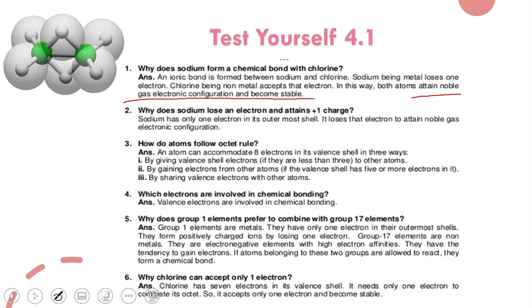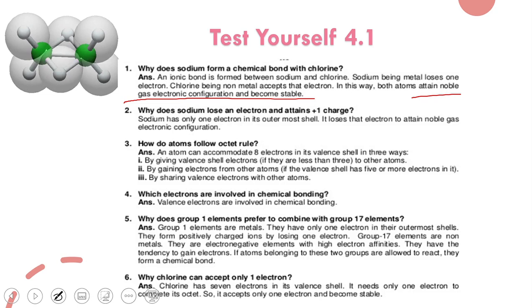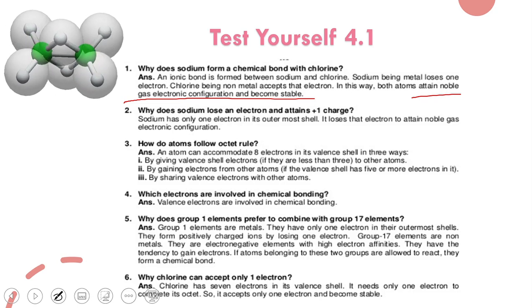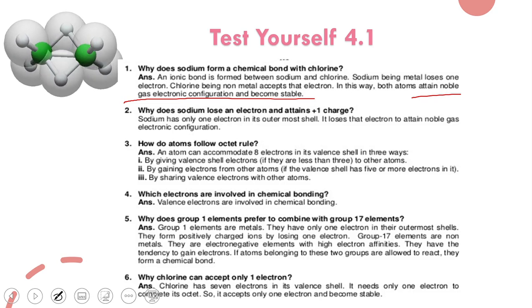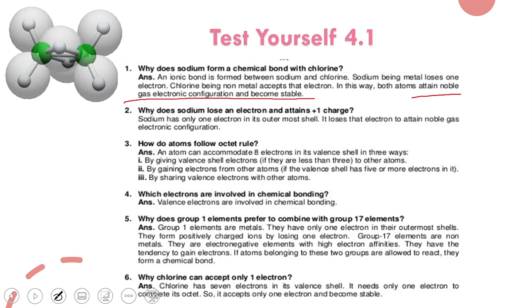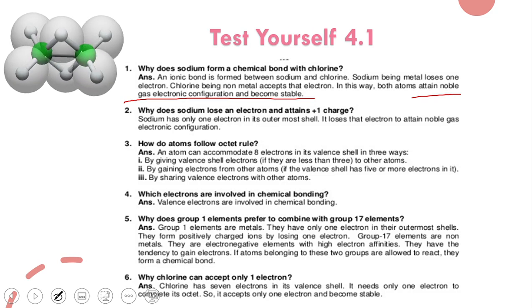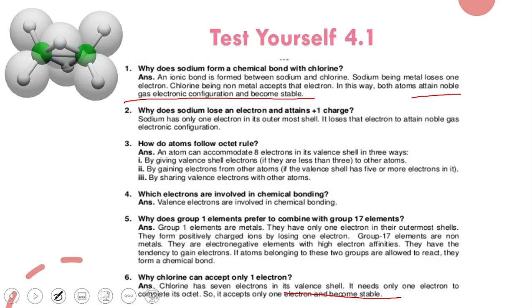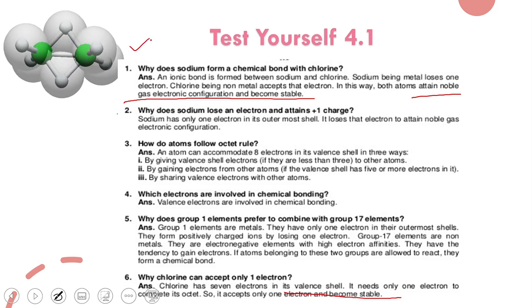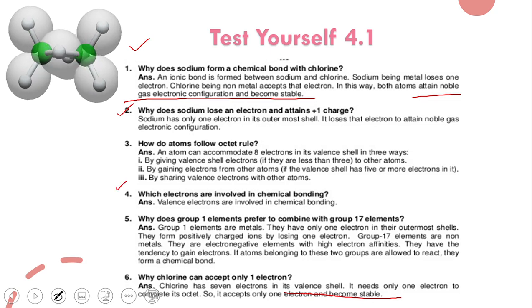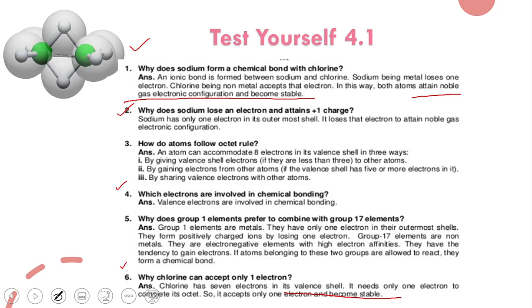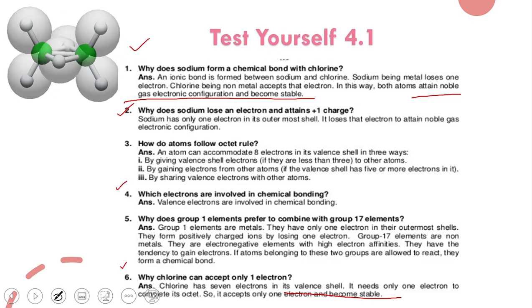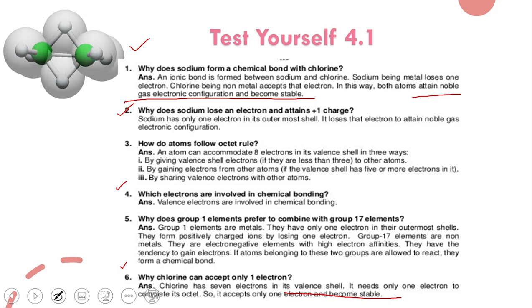Why can chlorine accept only one electron? Because there is only one vacancy in its last shell — it already has seven electrons and needs only one more to complete its octet. After completing its octet it becomes stable. You will write the answers to questions number one, two, four, and six in your notebook. The remaining ones are present on the topics. That is all for today. Thank you and Allah Hafiz.